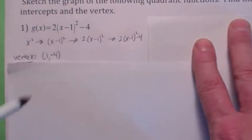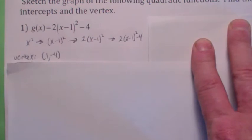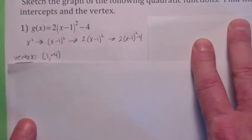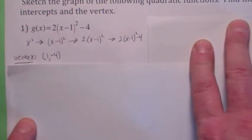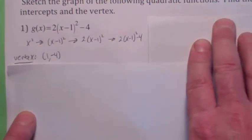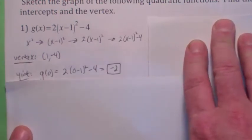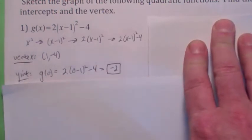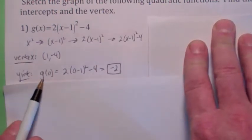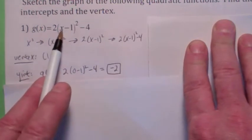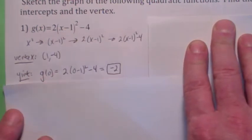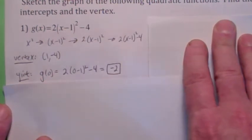When it's written in this form, it's easy to tell what the vertex is. Not only are we going to find the vertex, let's find the y and x intercepts and look at the graph. The y-intercept is just g of zero — plug in zero for x, and you find out that the y coordinate is negative 2.